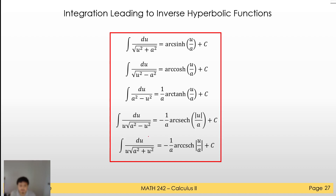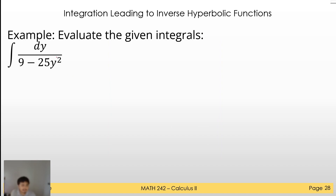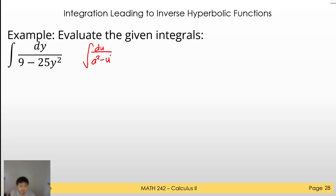So how do we solve an example? Evaluate the given integral: the integral of dy over 9 minus 25y². We cannot use u-substitution directly, so this should be an integration leading to either inverse trigonometric or inverse hyperbolic. The matching formula is: the integral of du over a² minus u², which equals 1/a · arc tanh(u/a) plus C.